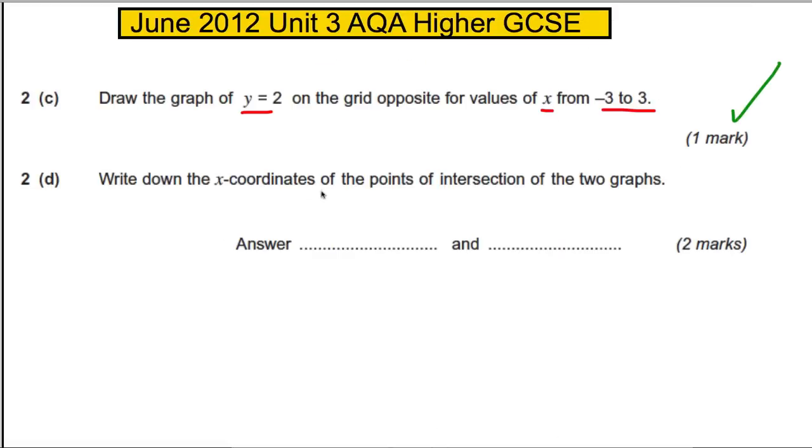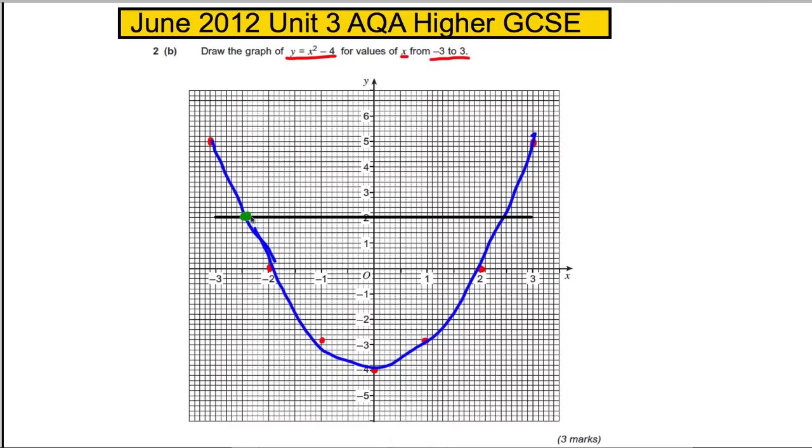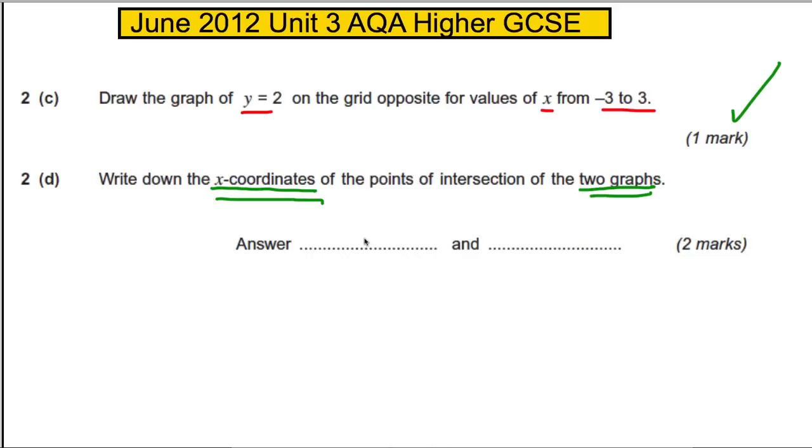And it says write down the x coordinates of the points of the intersections of the two graphs. Where do they intersect? They intersect here and here, and we want those x values. So this to me looks like negative 2.5 and this looks like 2.5 to me, so I put 2.5 and negative 2.5. You would always get some leeway in that particular question but that would definitely get you the mark there and we're done.